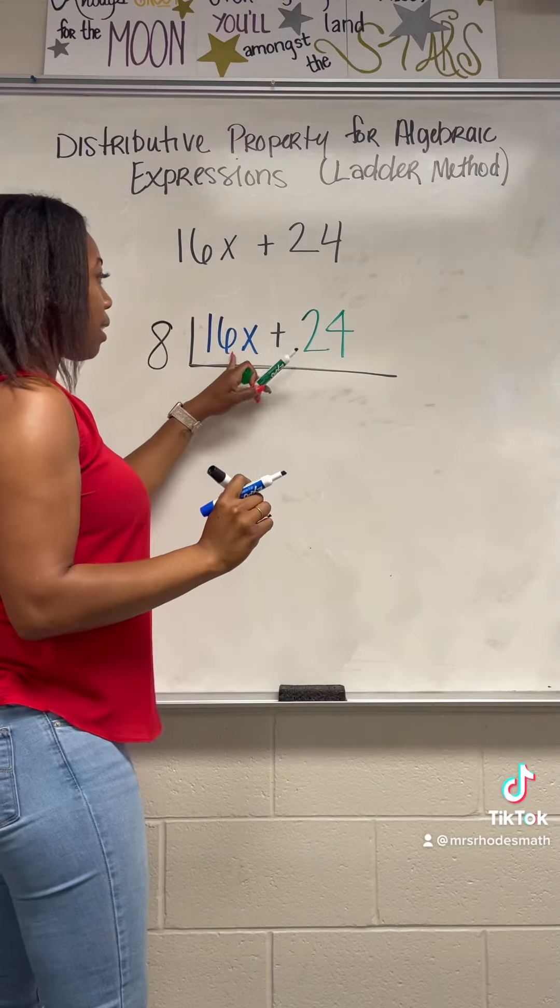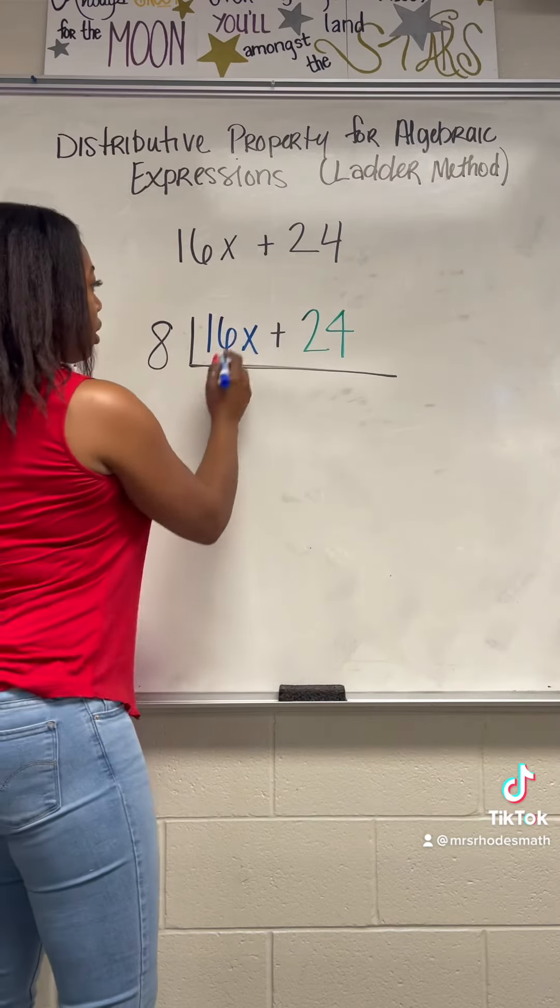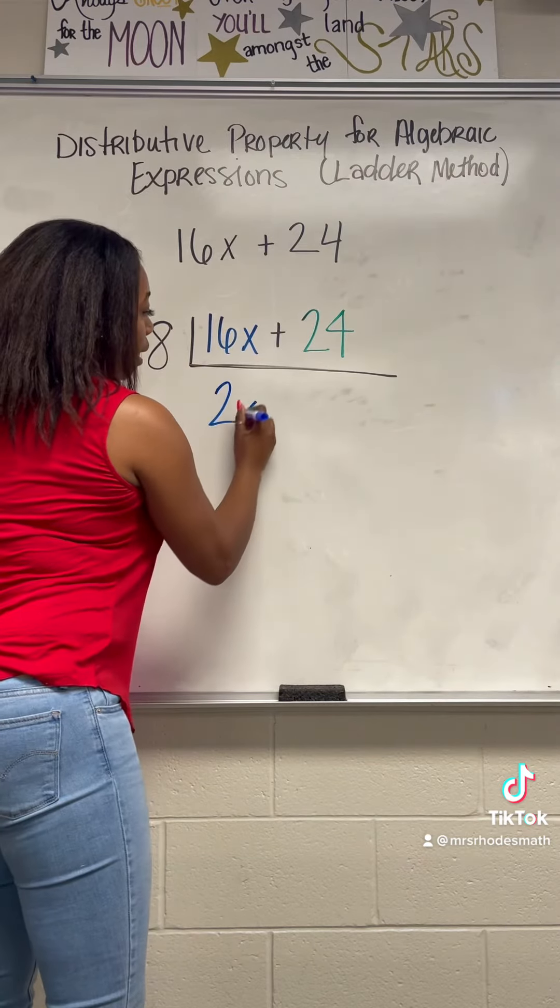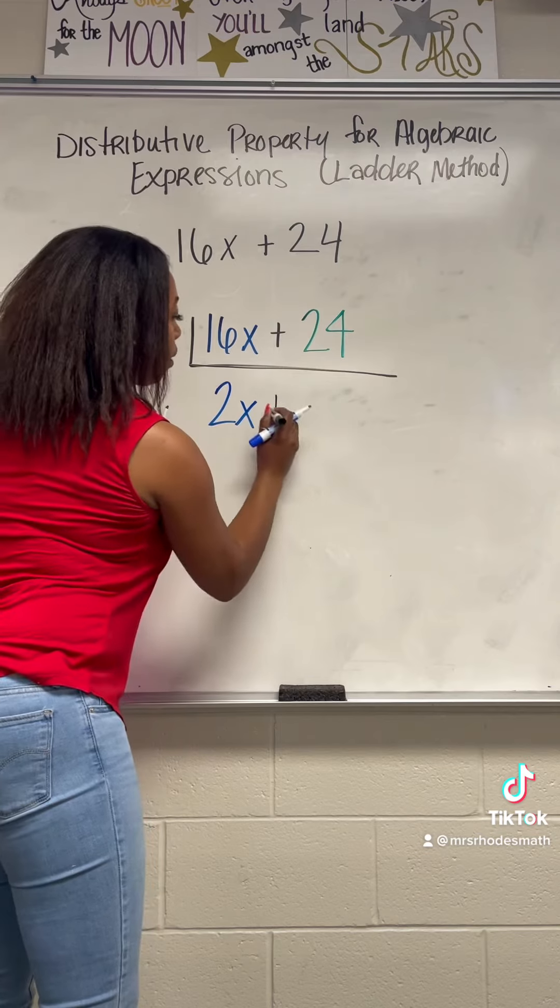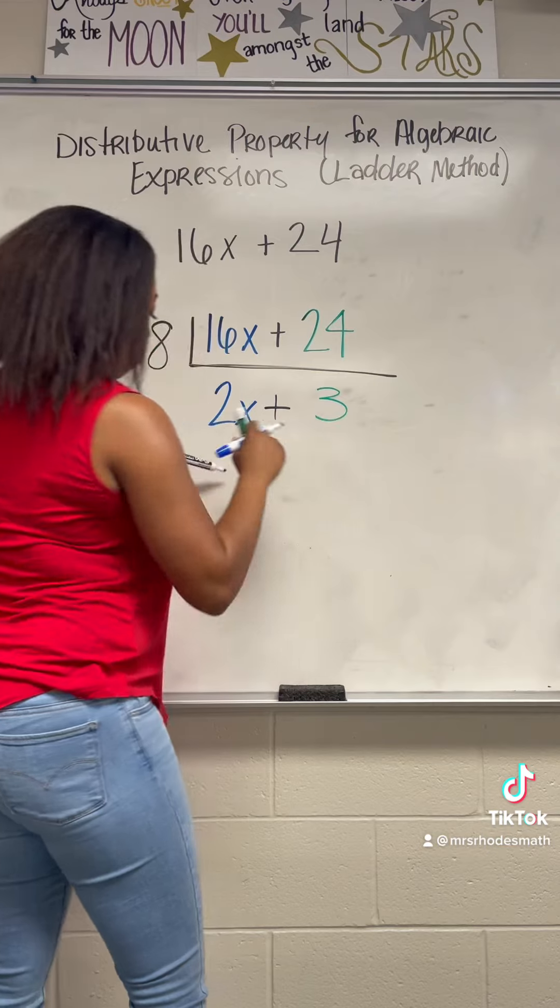I'm going to take 16 and divide it by 8, bring down the portions, and that should give me 2. Keep the variable. Keep the operative sign. And then 24 divided by 8 is 3.